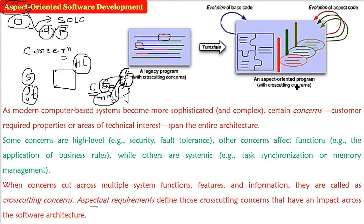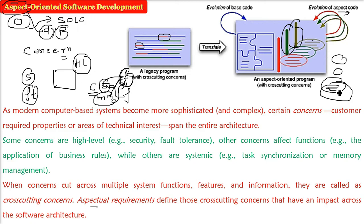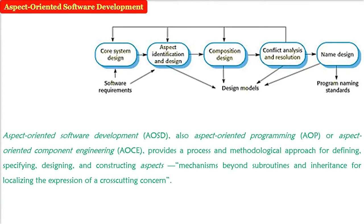In an aspect oriented program, we always evolve the base code, but the evolution of aspects can occur separately — high-level aspects, function aspects, systematic effects — and these have intersection points. Aspect oriented software development, aspect oriented programming, and aspect oriented component engineering (AOCE) are all the same. The names are changed but they all refer to one thing.